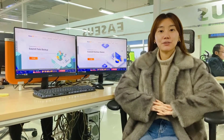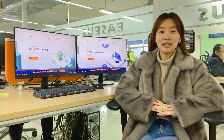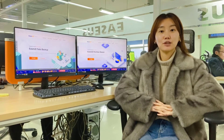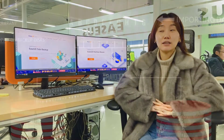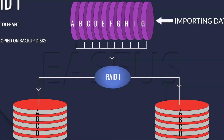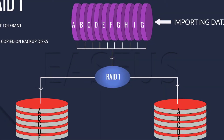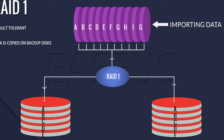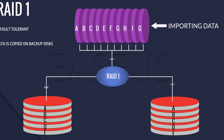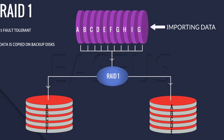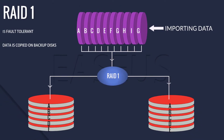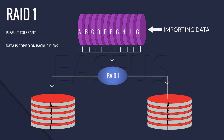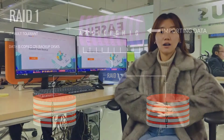RAID 1 uses mirroring to write data to multiple drives. This means that when you write a file, the file is actually written to multiple disks. If one of the disks fails, all data is still safe on the others.